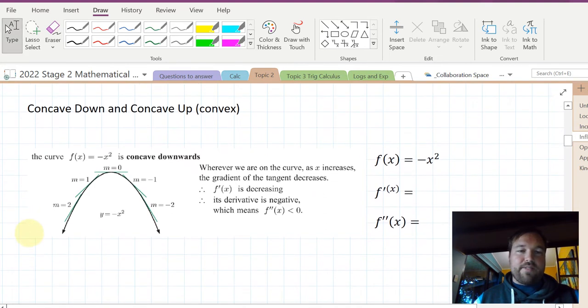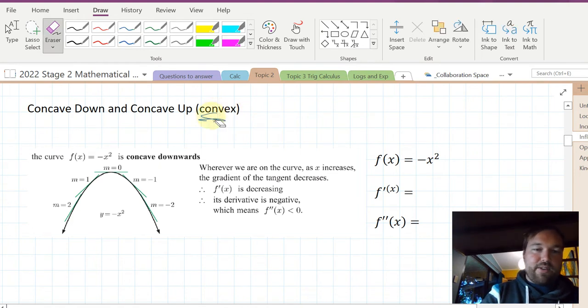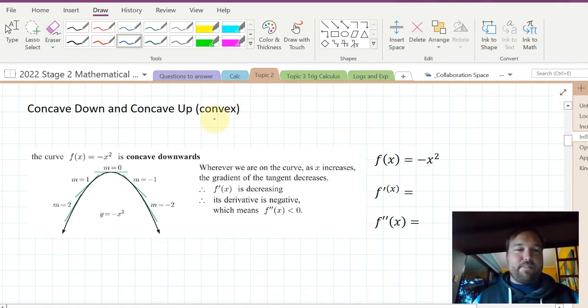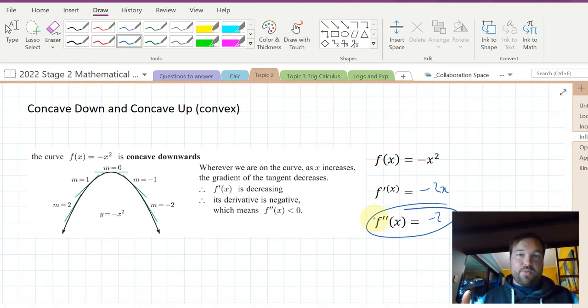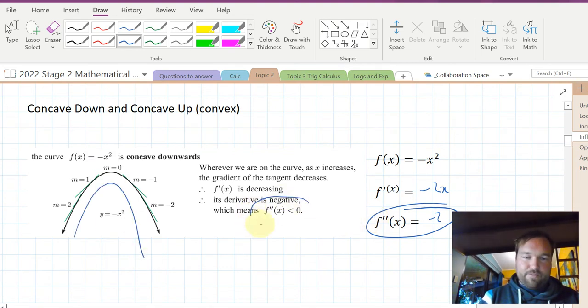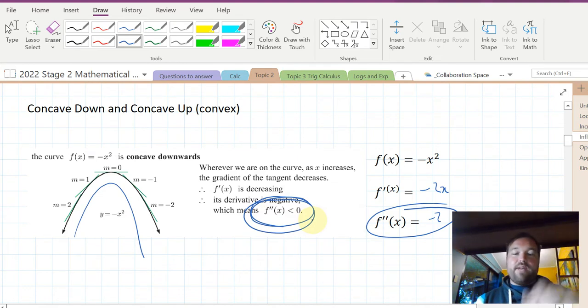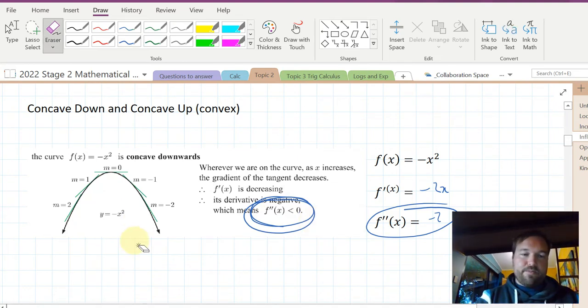We want to look at concave down and concave up. Concave up used to be called convex, but it confused so many people, we decided calling it concave up. So, concave down, if you look at f(x) = -x^2, the derivative is -2x, second derivative is -2. What that means is the second derivative is negative for the entire thing. If the second derivative is negative, it is concave down. The graph will be concave down, it will have that downwards curve, like a cave.